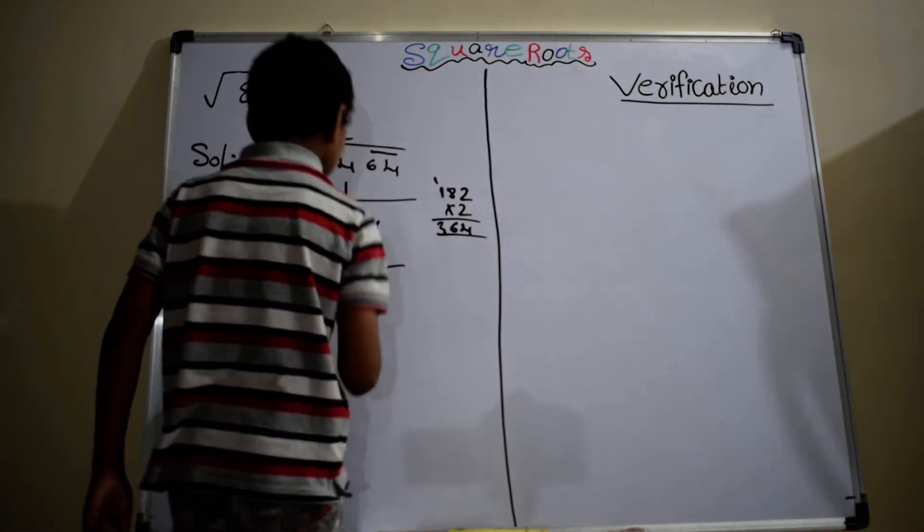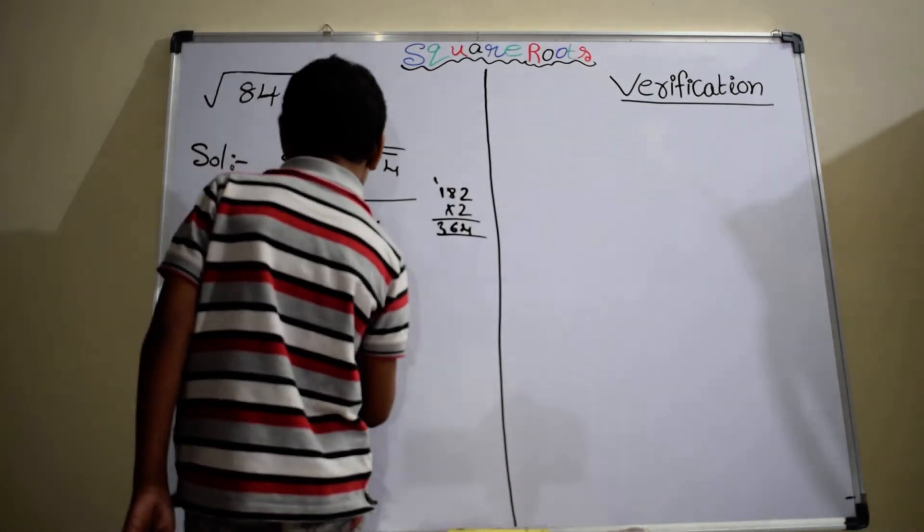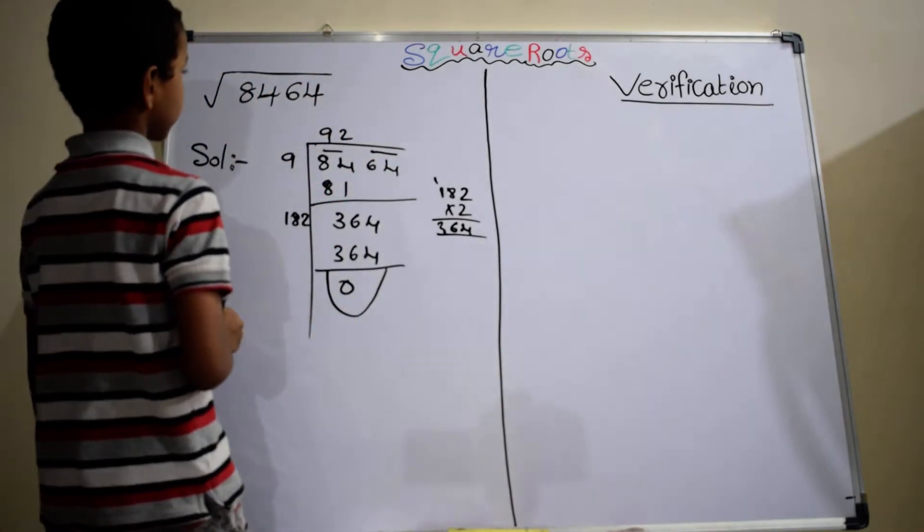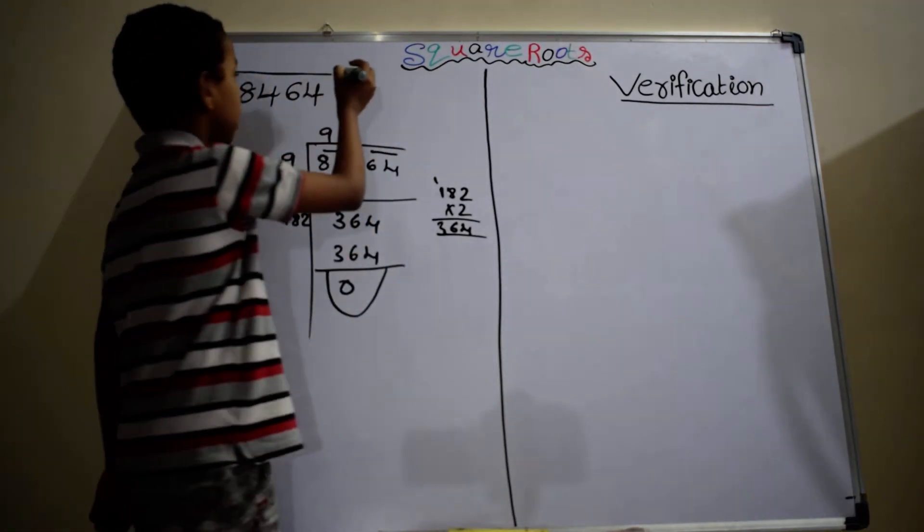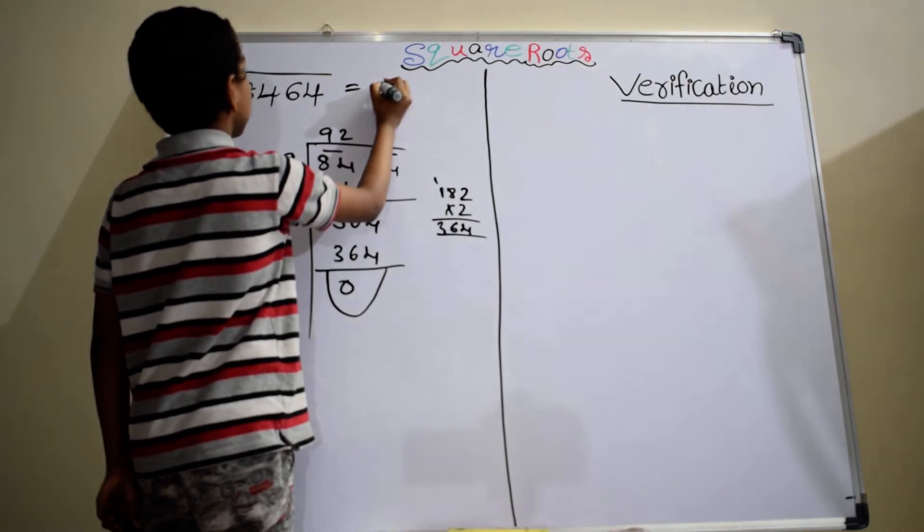364 minus 364 equals to 0. The square root of 8464 equals to 92.